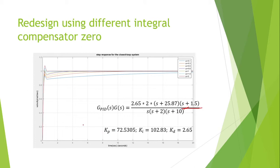Then we get the PID constants: Kp equal to 72.5305, Ki equal to 102.83, and Kd equal to 2.65.